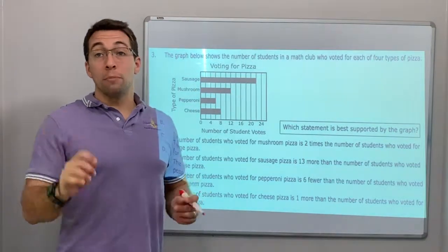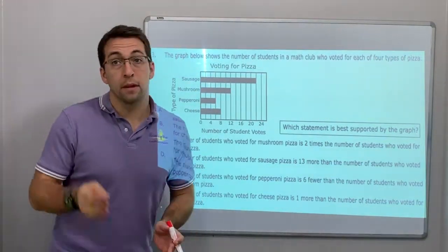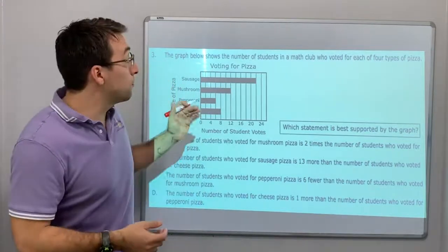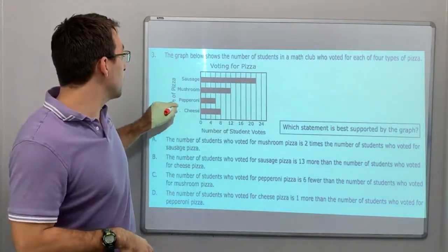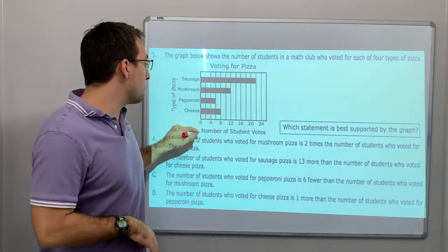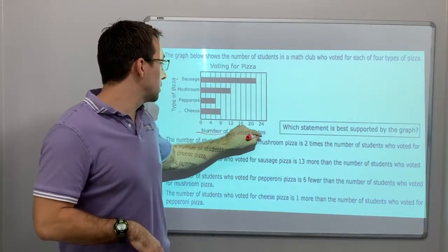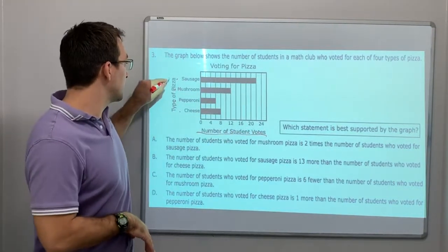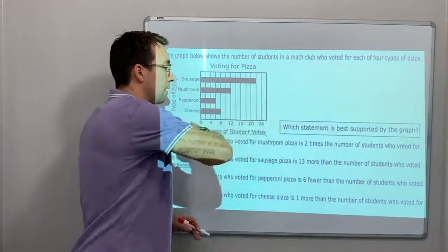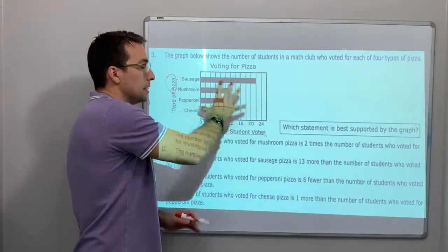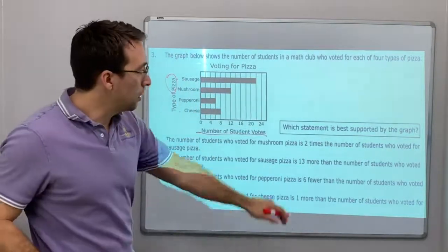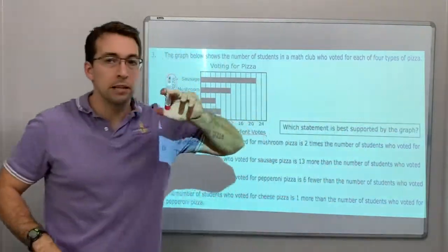Question 3: The graph shows the number of students in a math club who voted for each of the four types of pizza. The x-axis shows types of pizza and the y-axis shows number of students — it's always comparing two different things. Which statement is best supported by the graph?